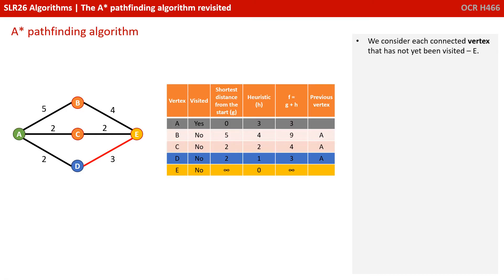We consider each connected vertex that's not been visited, well that's just E. So we need to calculate E's F value, well that's the G value, which is D's distance from start of 2, plus the edge value of 3, that's 5.